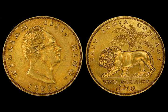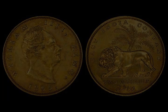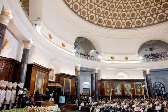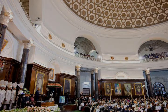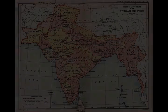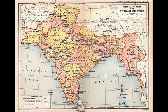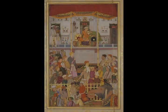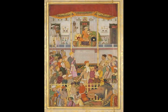By 1200 BCE, an archaic form of Sanskrit, an Indo-European language, had diffused into India from the northwest, unfolding as the language of the Rig Veda, and recording the dawning of Hinduism in India. The Dravidian languages of India were supplanted in the northern and western regions. By 400 BCE, stratification and exclusion by caste had emerged within Hinduism, and Buddhism and Jainism had arisen, proclaiming social orders unlinked to heredity.